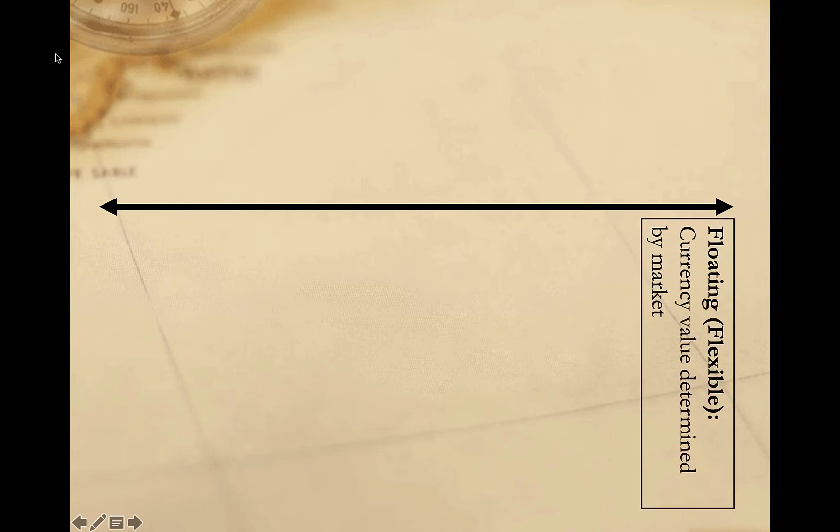Today, countries employ one of three broad exchange rate systems. At one end, completely free-floating exchange rates permit the market alone to determine currency values. Currency values are determined by supply and demand with no government intervention. Because of this, these are sometimes referred to as flexible exchange rate systems.